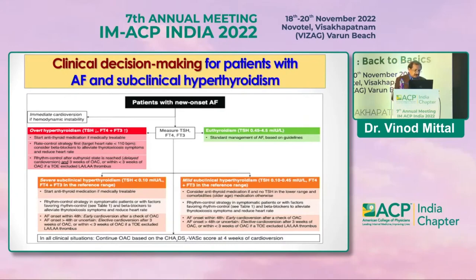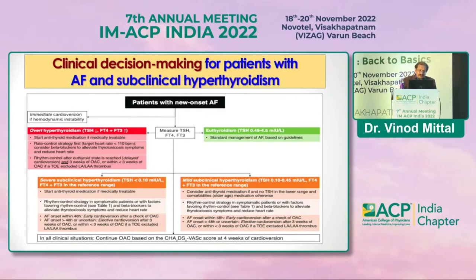If AF is within 48 hours of onset, we should proceed directly with cardioversion — either pharmacological or electrical. After cardioversion, oral anticoagulants should be started within three weeks or immediately, and continued for four weeks after cardioversion. This is an important point regarding what to do when a patient presents with AF.